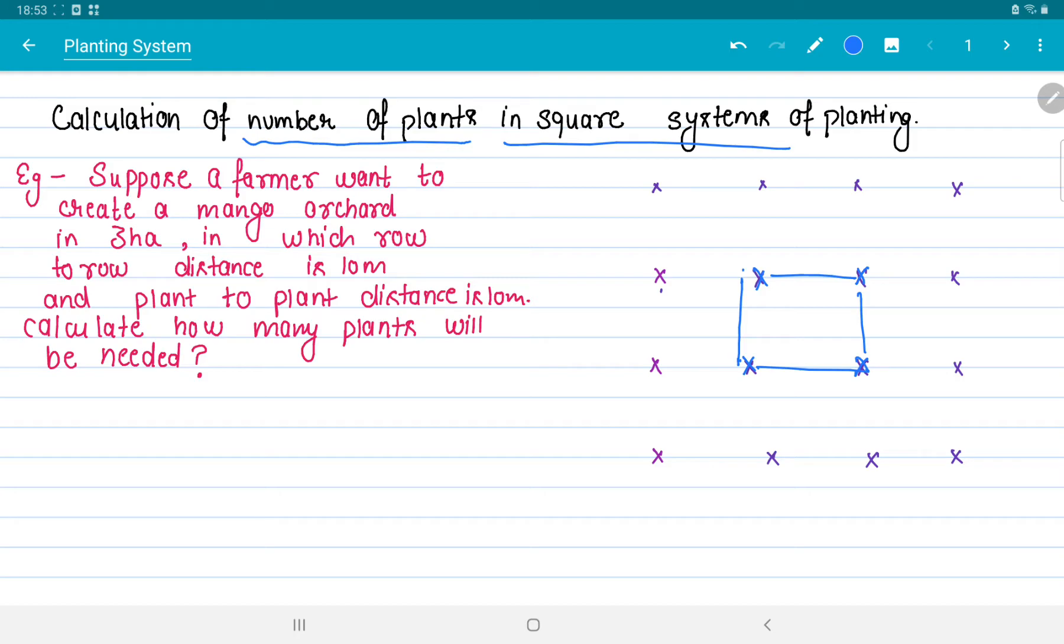We will do one example based on this square system of planting. How to calculate the number of plants? Suppose a farmer wants to create a mango orchard in 3 hectare land in which row to row distance is 10 meter and plant to plant distance is 10 meter. We have to calculate how many plants will be needed.